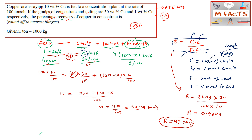To summarize: we applied the recovery formula — weight of concentrate times percentage metal in concentrate, divided by weight of feed times percentage metal in feed. Since the weight of concentrate was unknown, we first did a simple copper material balance to find x = 31.03 tons per hour. Then substituting into the formula gave us 93.09% recovery. There is no complex metallurgy here — just a simple material balance and the recovery formula.